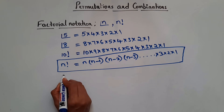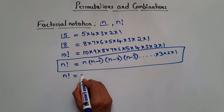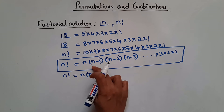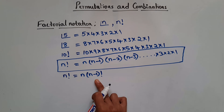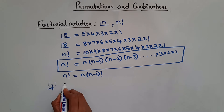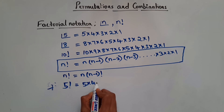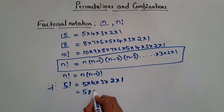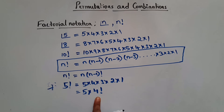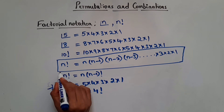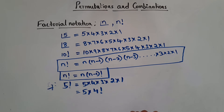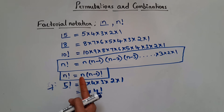We can also write n factorial as n × (n−1) factorial. For example, 5 factorial is 5 × 4 × 3 × 2 × 1, which can be written as 5 × 4 factorial, since 4 factorial is 4 × 3 × 2 × 1. So we have the property: n factorial = n × (n−1) factorial.